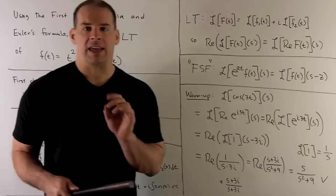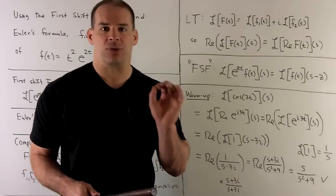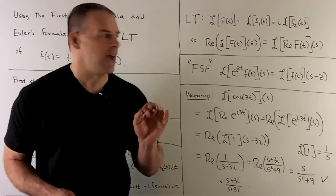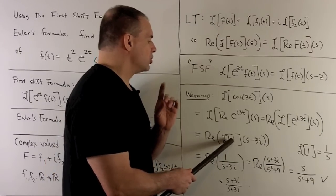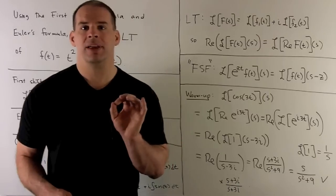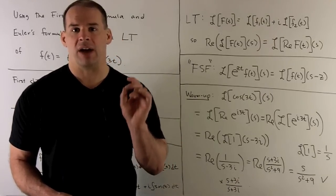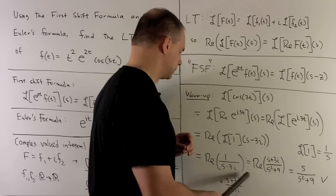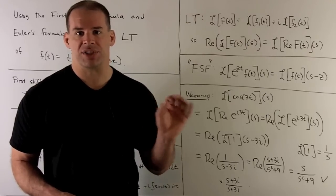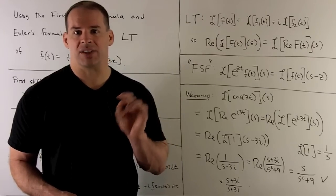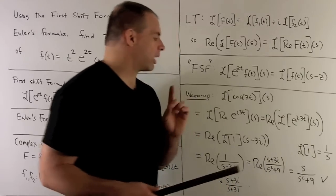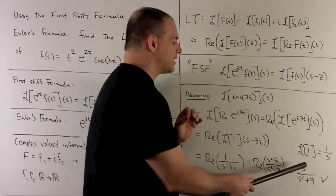Using our shift formula, e^(i3t) times one means we shift the Laplace transform of one by 3i, evaluating at s minus 3i. The Laplace transform of one is 1/s, so we take 1/(s − 3i). To find the real part, we clear the denominator by multiplying by (s + 3i)/(s + 3i). The denominator becomes s² + 9, and the numerator has s + 3i. Taking the real part leaves us with s/(s² + 9), which agrees with the answer we had before.